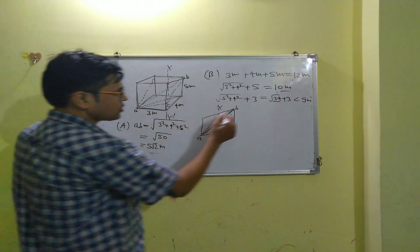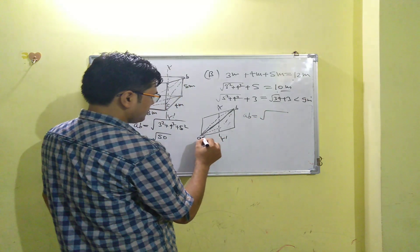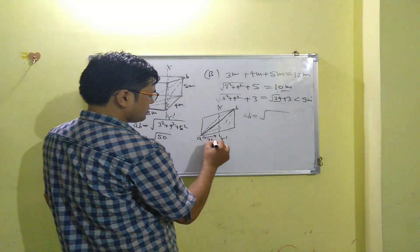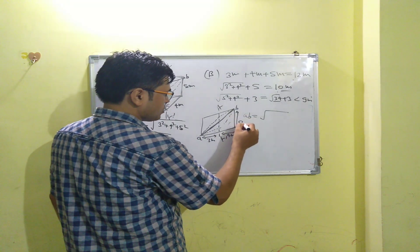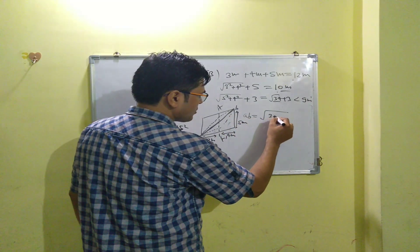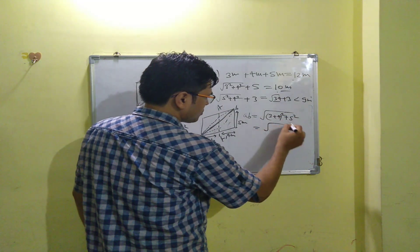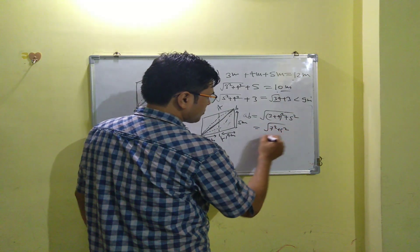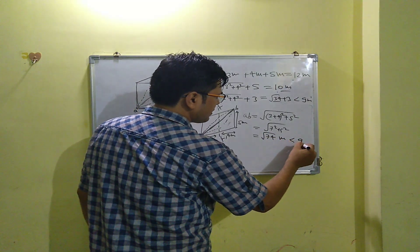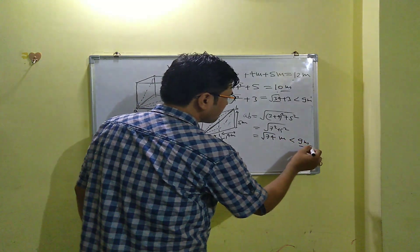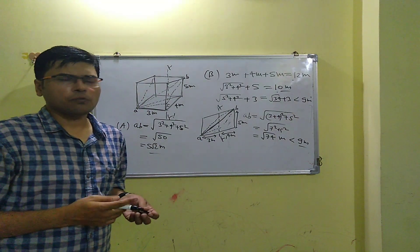So the path length here is: this side is 3 meters, this is 4 meters, and this is 5 meters. The path comes to root of ((3 + 4) squared + 5 squared), which is root of (7 squared + 5 squared) = root of (49 + 25) = root 74 meters. This is less than 9 meters and is the shortest crawling path.